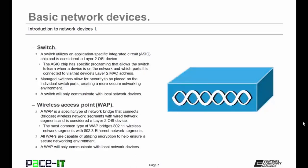Then there is the wireless access point, or the WAP. A WAP is a specific type of network bridge that connects or bridges a wireless network segment with a wired network segment, and it is also considered a Layer 2 OSI device. The most common type of WAP bridges an 802.11 wireless network with an 802.3 Ethernet network segment. All wireless access points are capable of utilizing encryption to help ensure a secure networking environment, and you should ensure that all of your WAPs have encryption enabled. A WAP will also only communicate with local network devices, unless it's a wireless router.